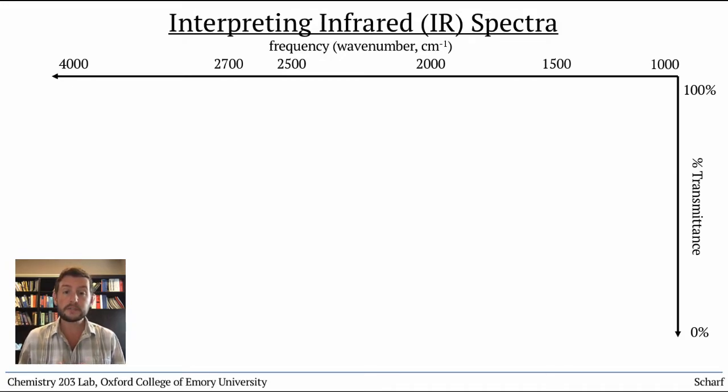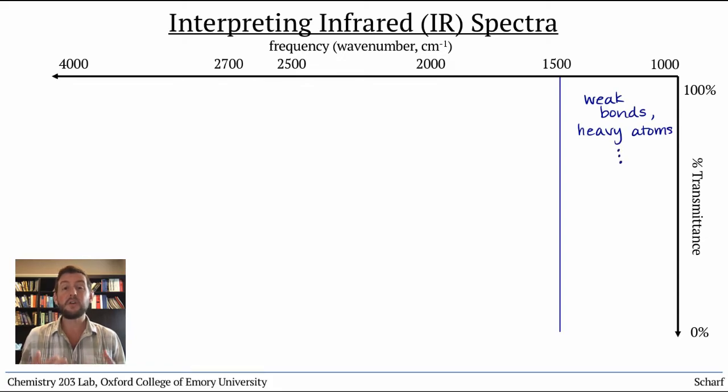The lowest frequency range, below about 1500 wavenumbers, corresponds to relatively weak bonds between fairly heavy atoms. In fact, almost all single bonds vibrate with frequencies in this region. Because most molecules contain lots of single bonds, this region can get pretty complicated pretty quickly, and we usually ignore it. It's referred to as the fingerprint region, though, because each molecule has a specific pattern of peaks in this region.